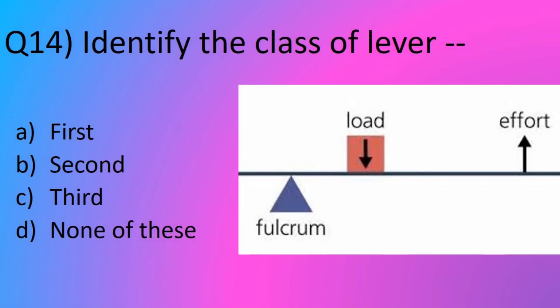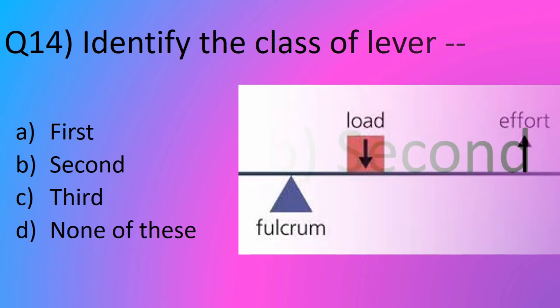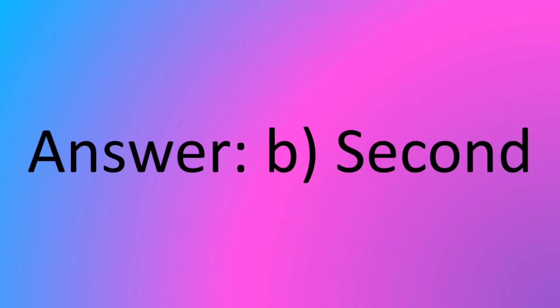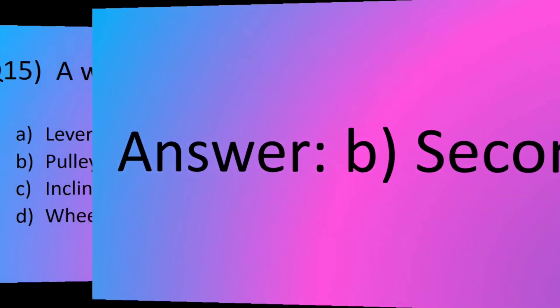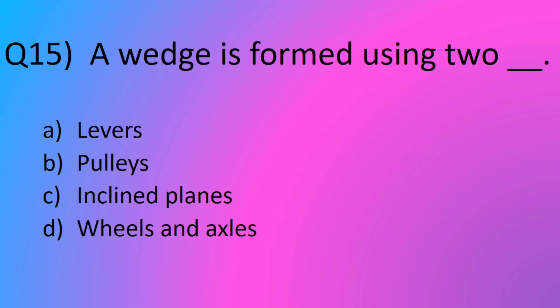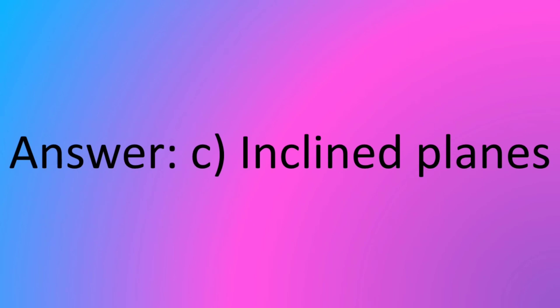Question number 14. A wedge is formed using two blanks. Option A, levers. Option B, pulleys. Option C, inclined planes. Option D, wheels and axles. The answer is option C, inclined planes.